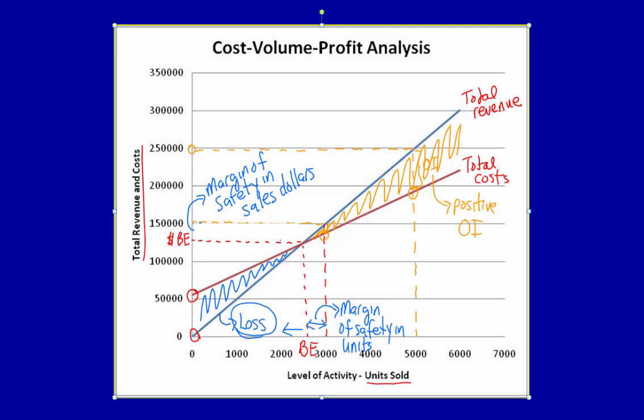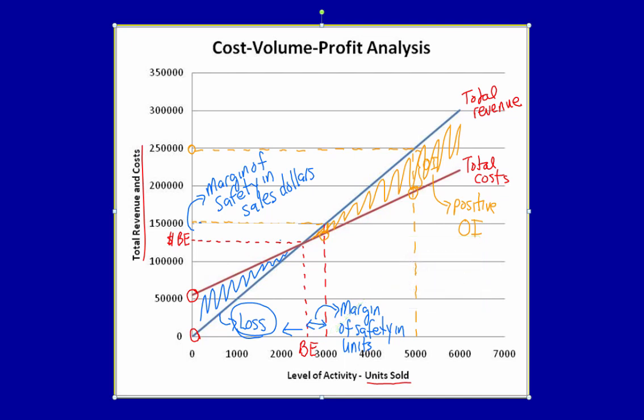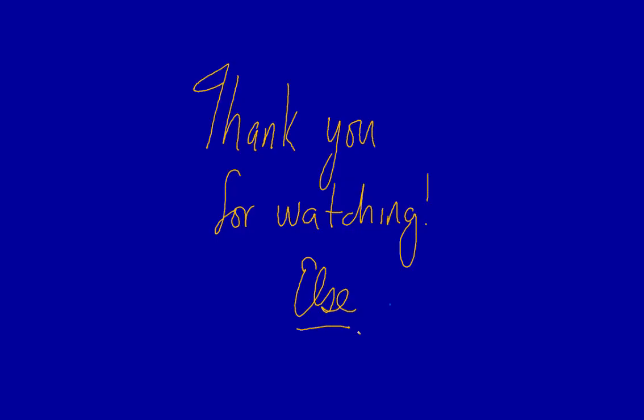This graph is very helpful in showing the President that, in an economic downturn, the company is at risk of losing money on this product due to their lower margin of safety. Actual sales is very close to the break-even point, and a decline of between 300 and 500 units would result in losses. In the next video, we'll calculate the break-even point in units and sales dollars. Thank you for watching, and I hope you'll join me in the next one.